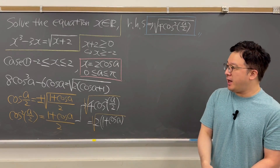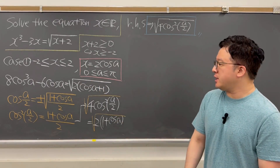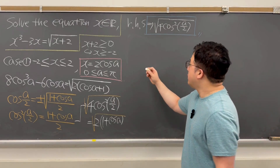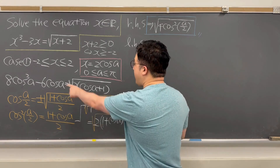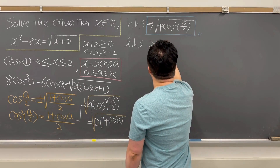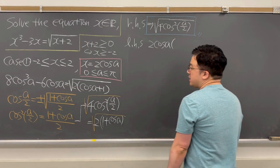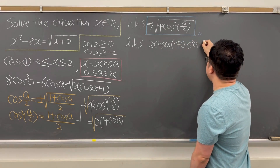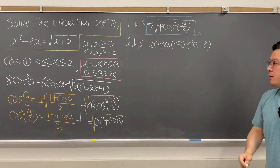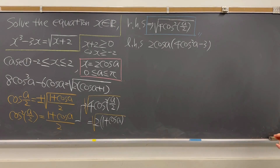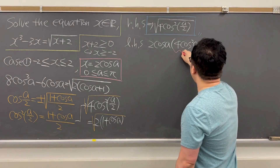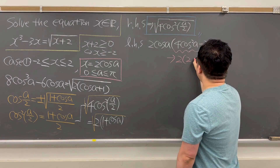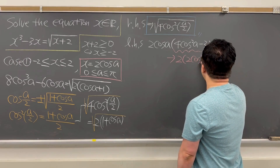Now for the left-hand side of the equation, we have 8 cosine cubed A minus 6 cosine A. Let me factor 2 cosine A out. So working on the left-hand side, factoring out 2 cosine A gives us 2 cosine A times the quantity (4 cosine squared A minus 3). I'll continue using trigonometric identities, so we can rewrite the inside of the parentheses.